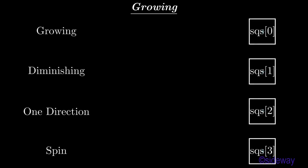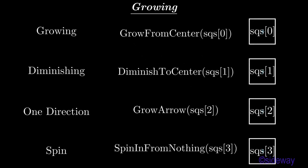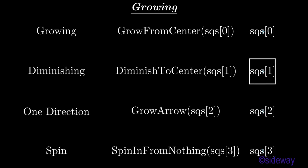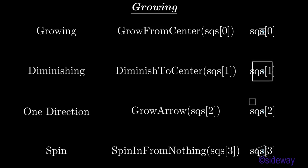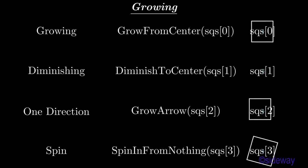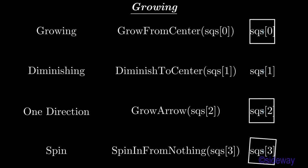In general, growing methods are used to transform the size of a mathematical object according to the specified method. Types of growing methods are growing, diminishing, one direction, and spin.